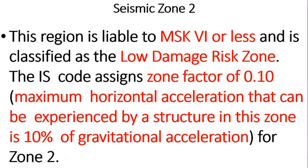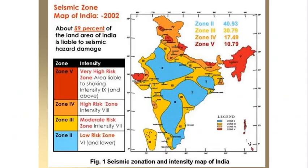Zone 2 is measured under MSK scale 6 or less and is classified as a low damage risk zone with a zone factor of 0.10. The zone factor is measured using the maximum horizontal acceleration that can be experienced by a structure in this zone — 10% of gravitational acceleration. This is how the factor is measured and assigned for each zone. You can see the seismic zone map of India 2002.